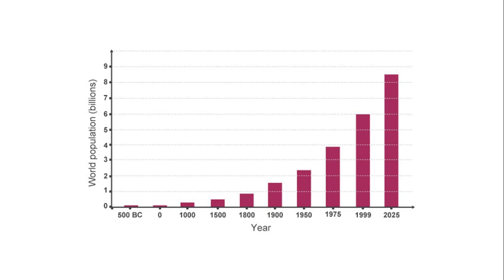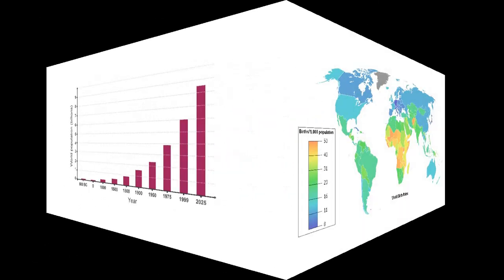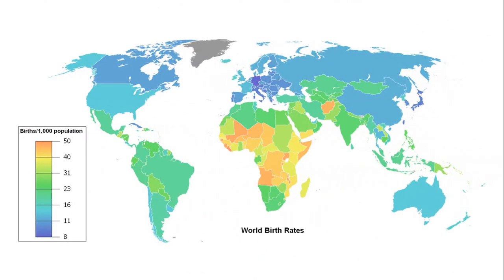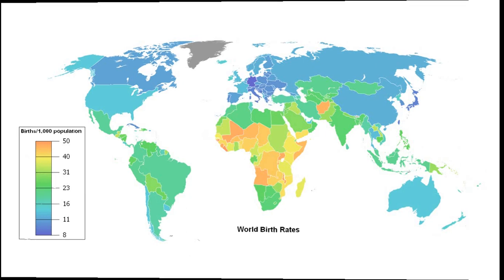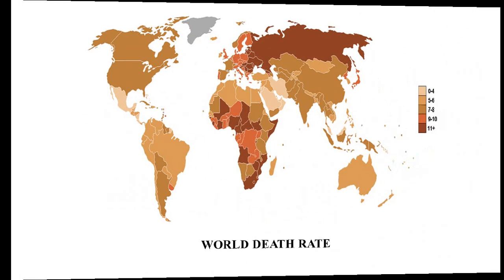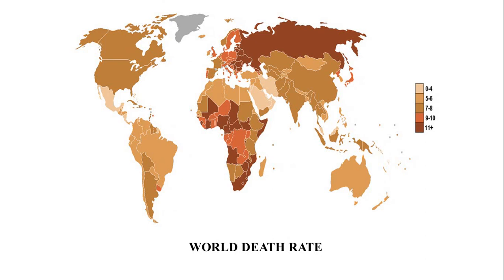Now let us talk about the factors of population change one by one. First comes birth rate. Birth rate refers to the number of live births per 1000 persons, whereas death rate refers to the number of deaths per 1000 persons.